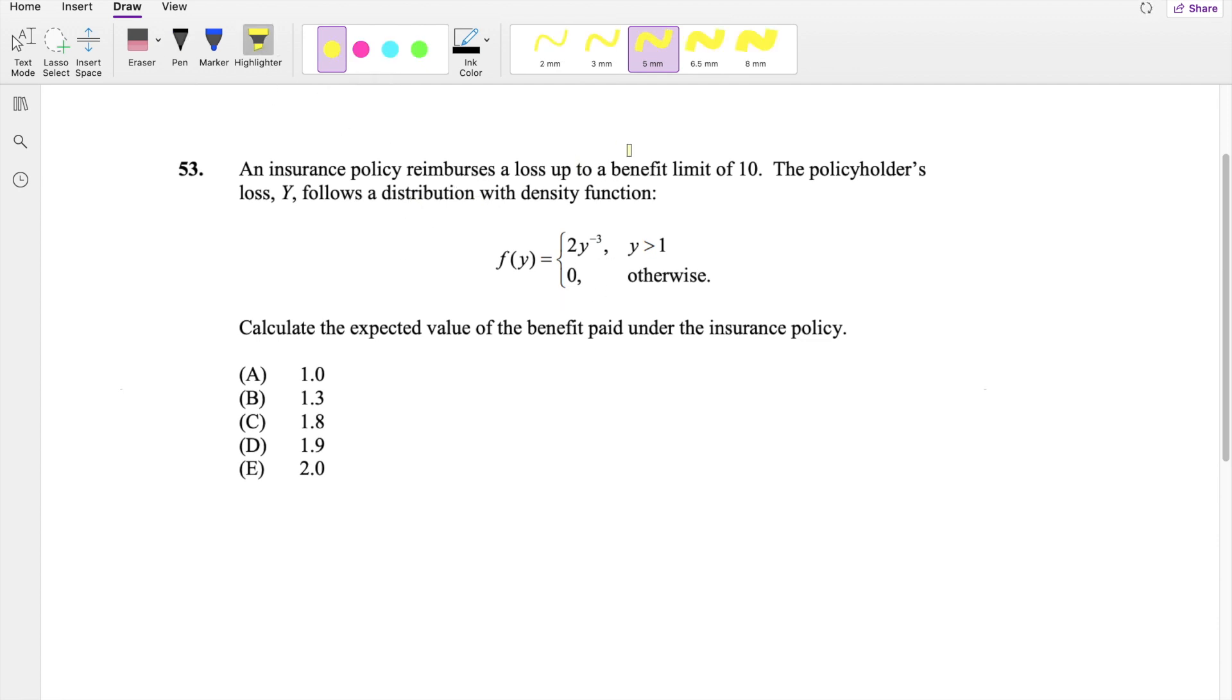So this question, what's unique about this one, it says it has a maximum benefit limit of 10 for Y, which follows the density function given here. Y only starts from greater than 1, so 1 to the maximum amount is going to be 10. So from 1 to 10, they're going to pay whatever amount the loss is, so that's going to be Y.